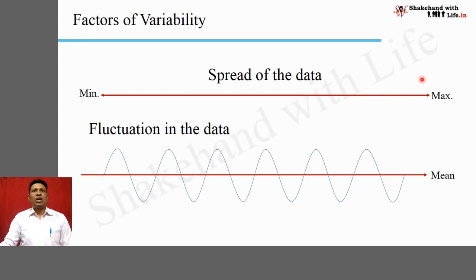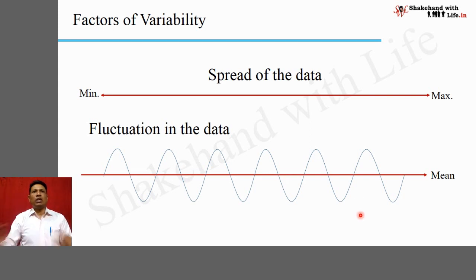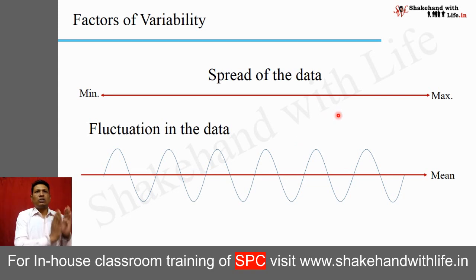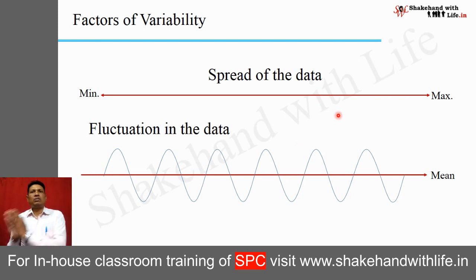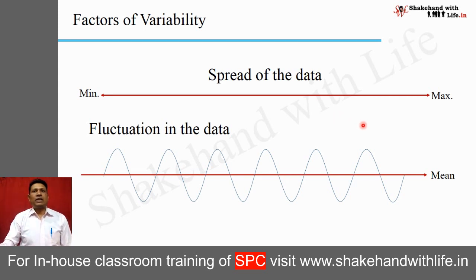Factors of variability: there are two factors. One is the spread of the data — how the data spread out around the mean value. The spread can be understood as the distance between the minimum and maximum values of the data. The second factor is fluctuation, which can be understood as the deviation of each individual data value from its mean value.